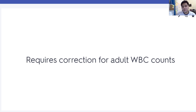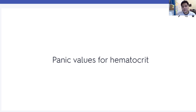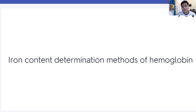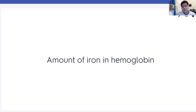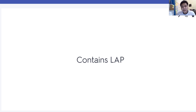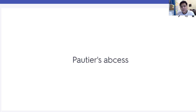Less than 14% and greater than 60% are the panic values for hematocrit — these are values that need to be reported immediately. Kennedy-Wong is the iron content determination method for hemoglobin. 3.47 mg per ml is the amount of iron in hemoglobin. Neutrophils contain the enzyme LAP (leukocyte alkaline phosphatase). Less than 2,000 and greater than 50,000 are the panic values for WBCs. Sézary cells are associated with mycosis fungoides.